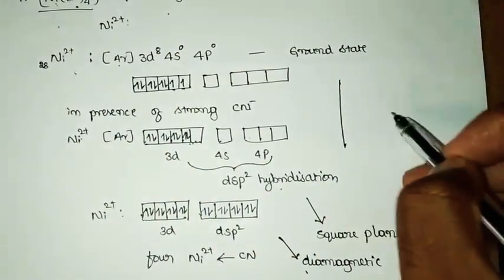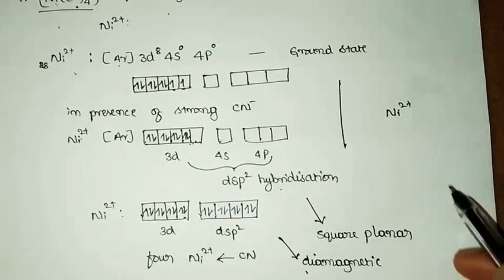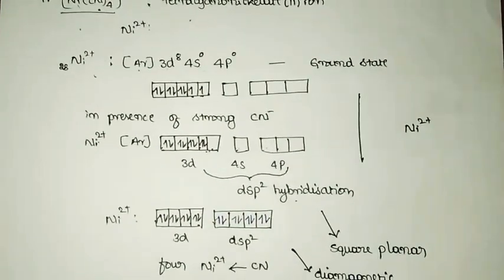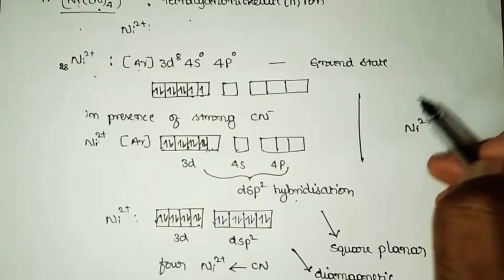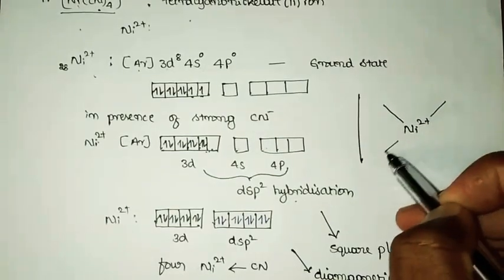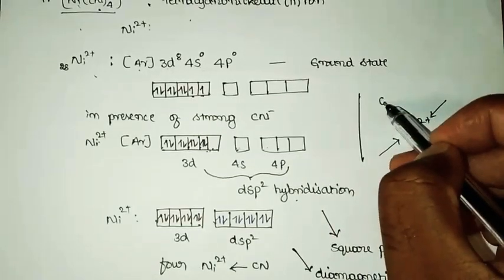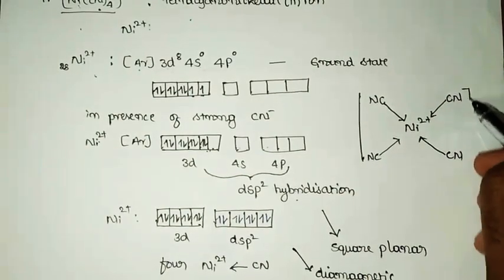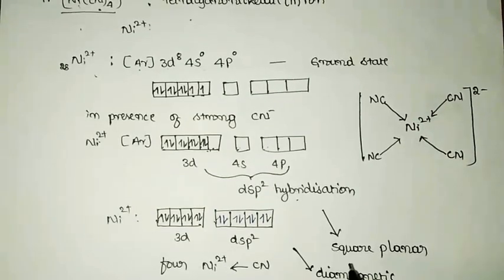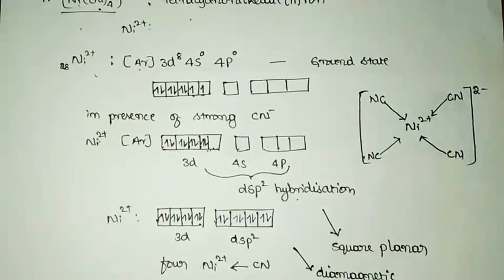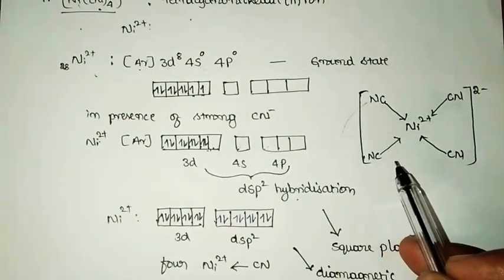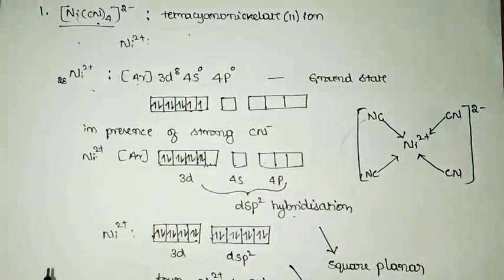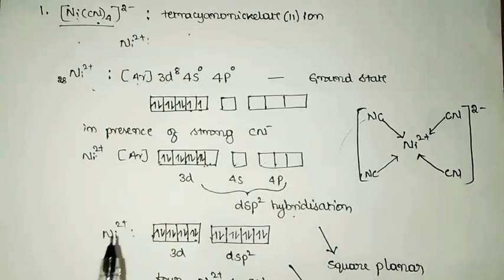We can write the structure of this complex with Ni²⁺ at the center and four CN⁻ ligands arranged in square planar geometry, with an overall 2− charge. This is one example of the application of valence bond theory to coordination compounds.